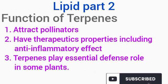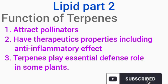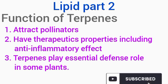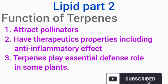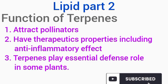What are the functions of terpenes? Because of their smell, they attract pollinators. They also have therapeutic properties, including anti-inflammatory, antimicrobial, as well as antioxidant effects. Terpenes also play an essential role in plant defense.